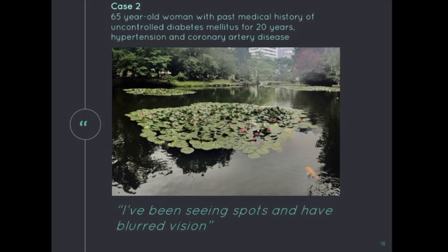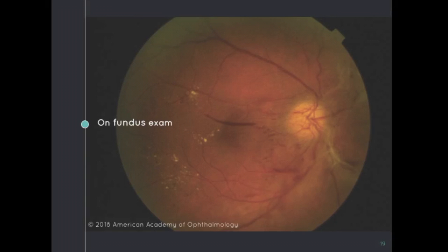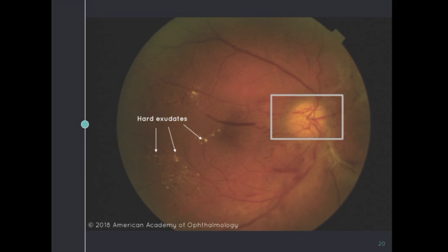In case 2, our patient is a 65-year-old woman with a past medical history of uncontrolled DM for 20 years, hypertension, and coronary artery disease, who presents with seeing spots and blurry vision. After taking a good history, we move into the physical exam. Her fundus photo also shows hard exudates, but what differentiates this photo from the previous case is the presence of abnormal new blood vessel growth, which is characteristic of PDR.